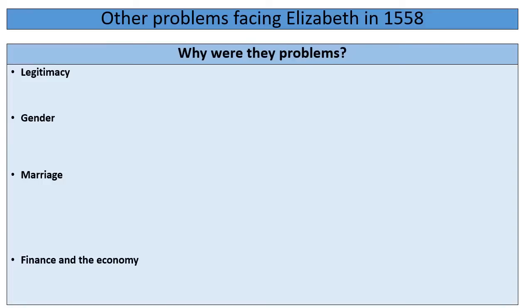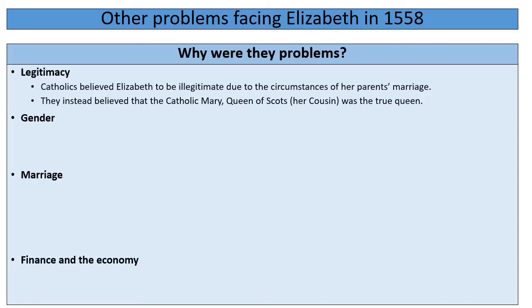The first problem is legitimacy — the issue of whether someone is the authentic, correct monarch. Catholics believed Elizabeth was illegitimate because her parents Henry VIII and Anne Boleyn's marriage had never been authorised by the Pope, who according to Catholics is the only person who can authorise a divorce and new marriage. Therefore they considered her a bastard child unable to become monarch.